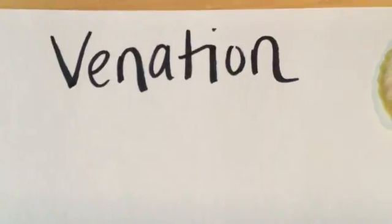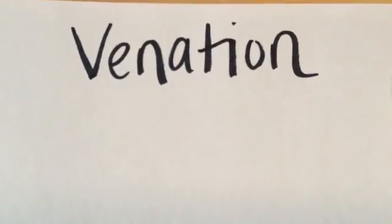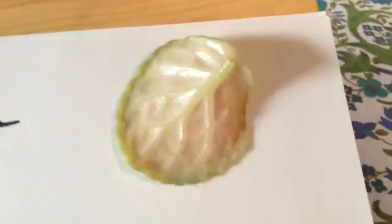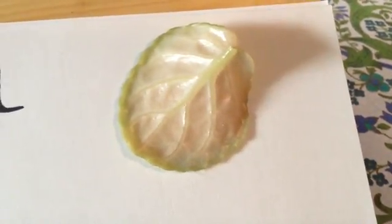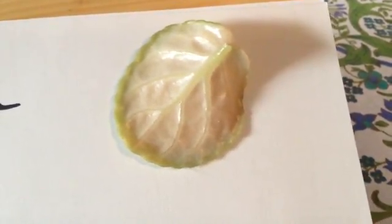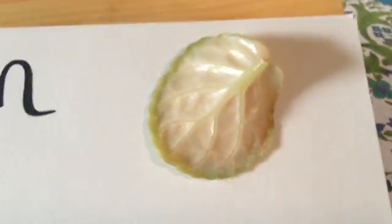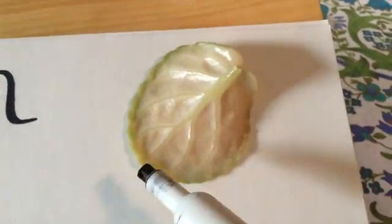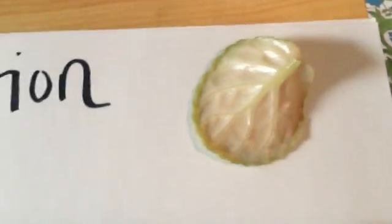Venation is about the pattern of veins on a leaf. Here is an African violet leaf and you can see a strong central vein down the center with other veins coming off.